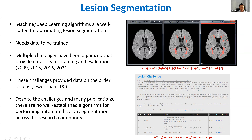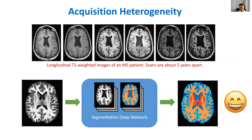Despite these organized challenges and the many publications describing algorithms for MS lesion segmentation, there are still no well-established algorithms used throughout the community. Algorithms developed by certain groups work well on their own data, but they don't make it out of the silo of a particular institution. Part of the reason is the heterogeneity in acquisition data. Here are longitudinal T1-weighted images of an MS patient scanned at NIH, about five years apart, showing how much variation there can be in the contrast and noise properties of MRI.